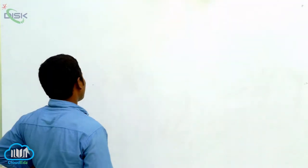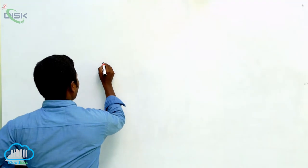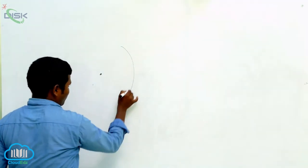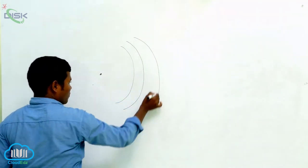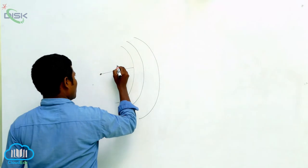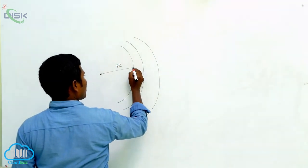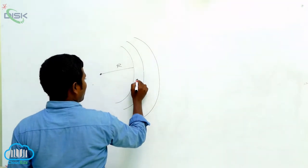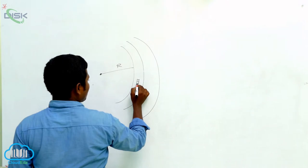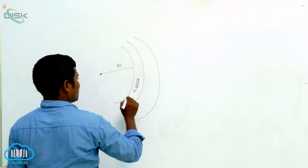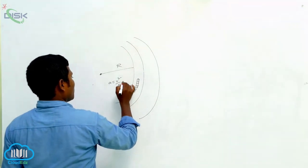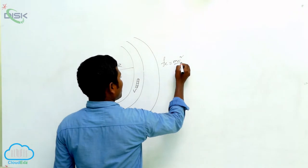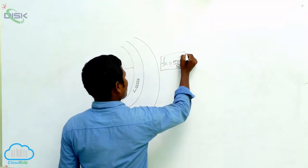Centripetal force — when can we say that is centripetal force? Let us take one car moving. There is a center point and this is the radius. The car has some velocity, and the acceleration is v square by r. The centripetal force Fc is equal to mv square by r. This is the centripetal force formula you have to remember.